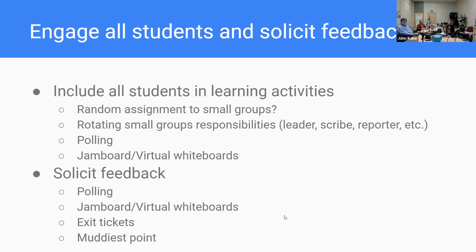Soliciting feedback from students can be done in a number of ways — virtual whiteboards like Jamboard, exit tickets, muddiest point activities — giving all students the opportunity to share where they're stuck, what's working, and what's still unclear. Using polling software, which is typically anonymous, or a Google Form that can be set to anonymous, works well. For a large class, put a QR code up; for synchronous remote classes, post the URL in the chat; for fully asynchronous courses, post it in Brightspace.